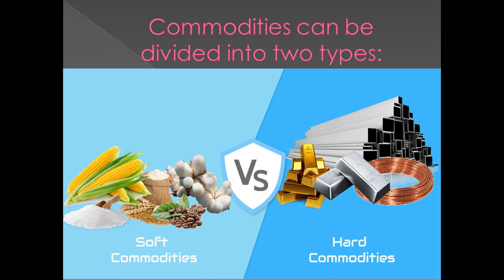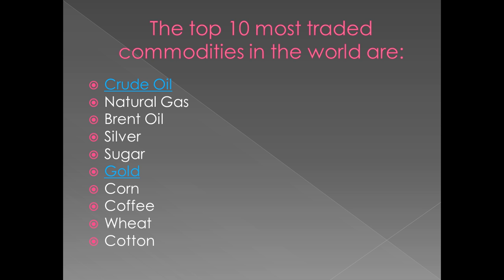Commodities can be divided into two types: soft commodities and hard commodities. Soft commodities include food, cotton, coffee, sugar, corn, etc. Hard commodities include copper, silver, gold, and other metals. The top 10 most traded commodities in the world are crude oil, natural gas, Brent oil, silver, sugar, gold, corn, coffee, wheat, and cotton.